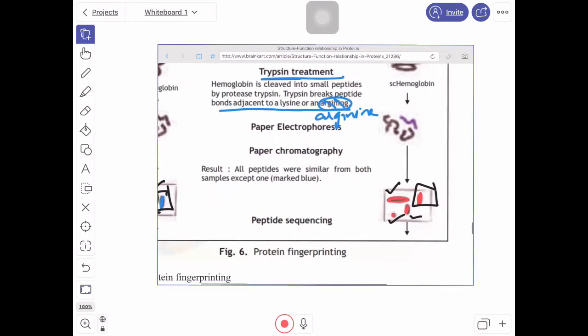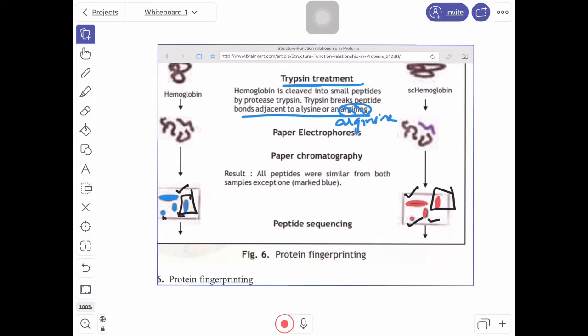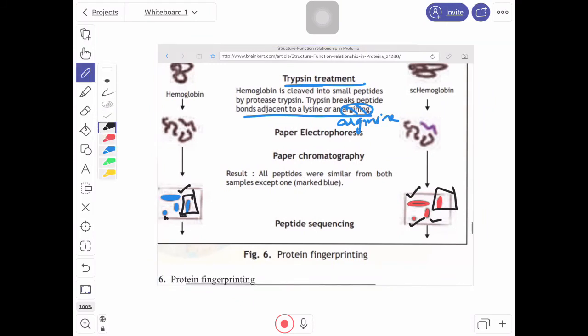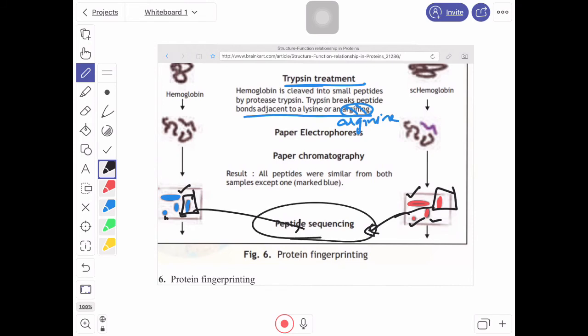Now this fourth fragment is taken and they have isolated separately both the fragments. This fragment and they have done sequencing. Sequencing, as you all know, it can be done by Sanger sequencing or advanced sequencing.